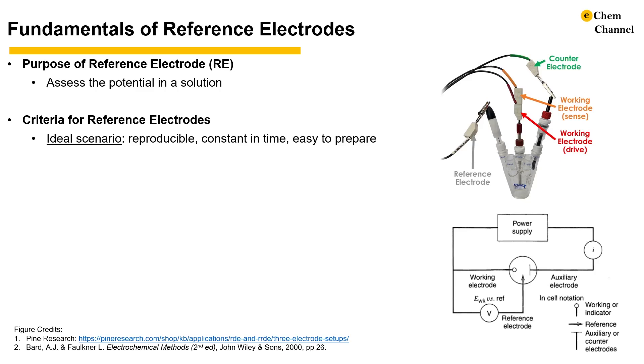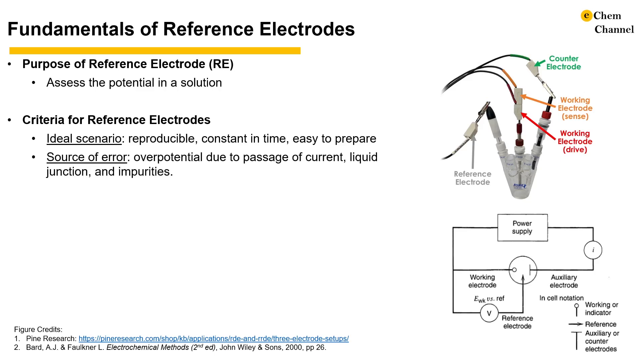To qualify as a reference electrode, it should possess a reproducible potential that is constant in time. Ideally, it should be easy to prepare as well.